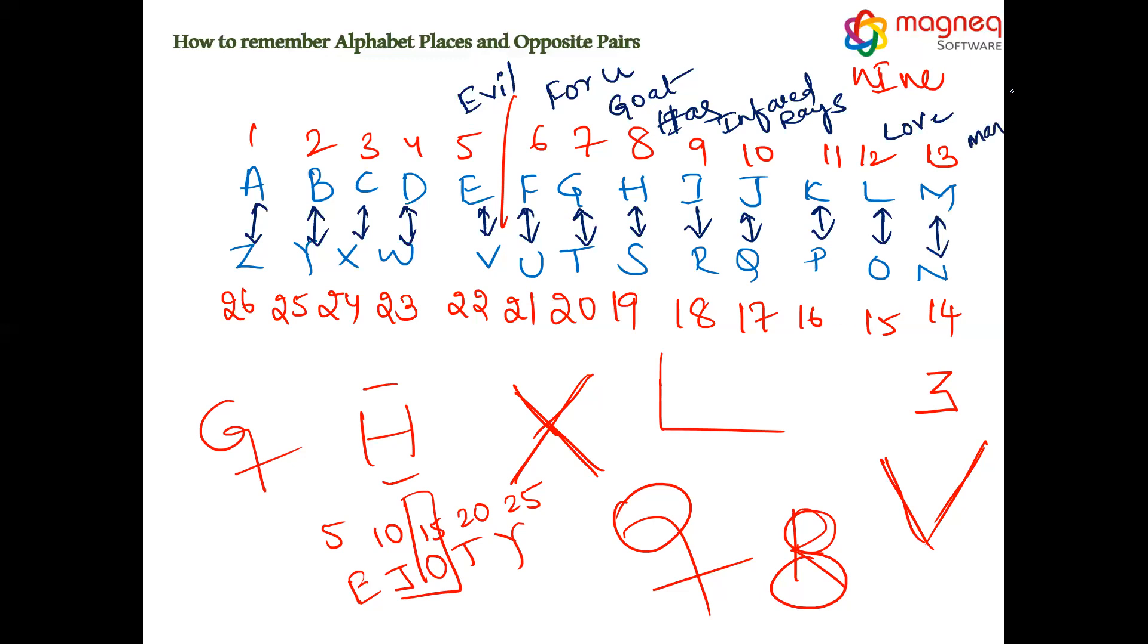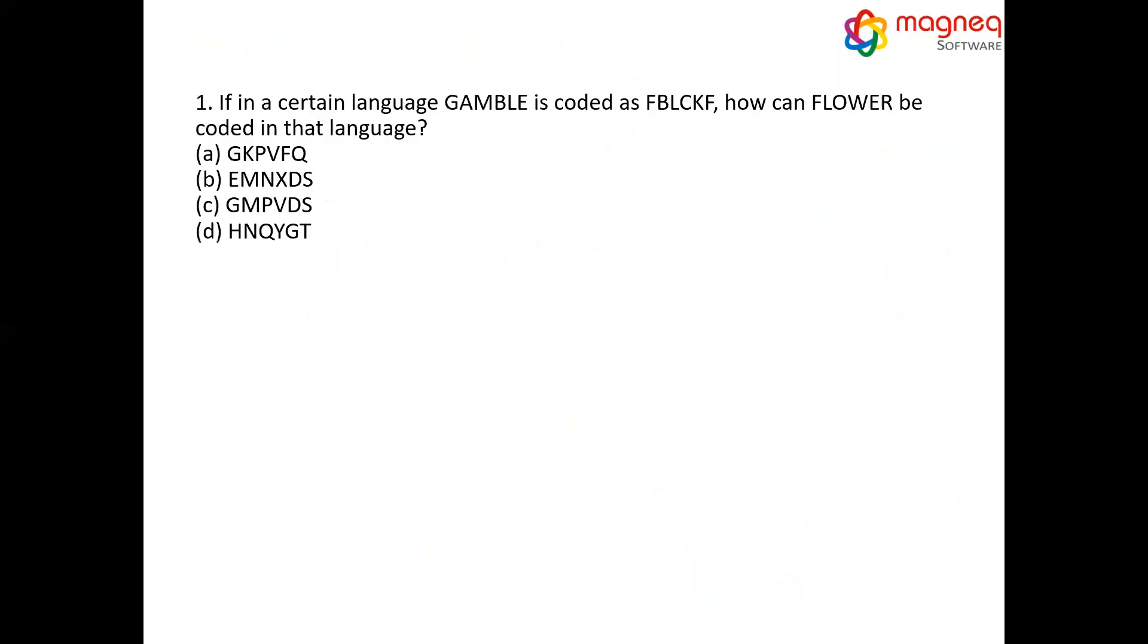Now, moving forward, let's see some questions which are based on coding and decoding. Now, here the first question. First, what we have to do? We have to think about the pattern. Here, GAMBLE is given. GAMBLE is given as F, B, L, C, K, F. Now, what is a code for FLOWER?